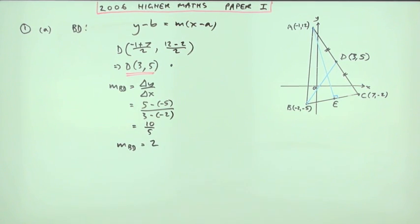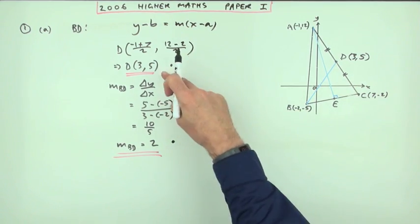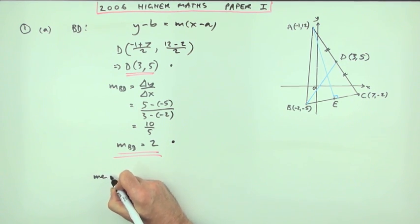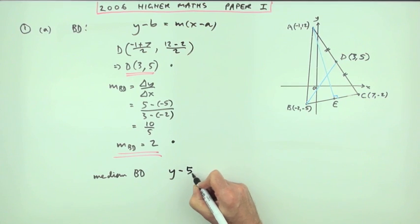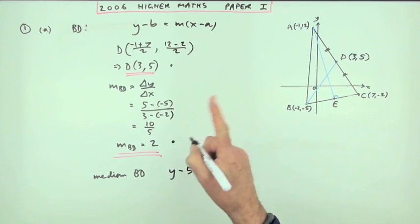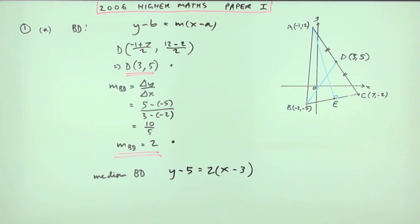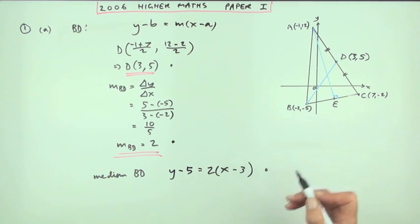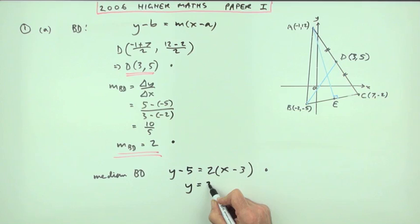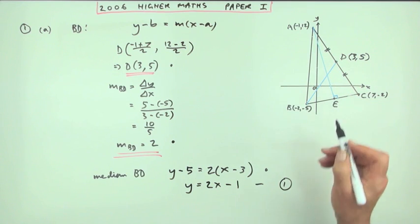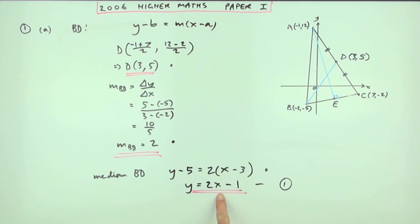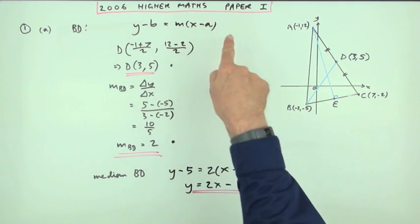The gradient of BD is 10 over 5, which is 2 — that's the second mark. Now slot that into the equation: the median BD has equation Y minus 5 equals 2 times X minus 3 — that's the third mark. Tidy that up: Y equals 2X minus 6 plus 5, so Y equals 2X minus 1. I'll call that equation 1.